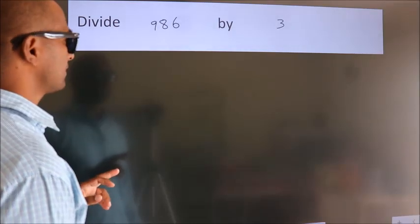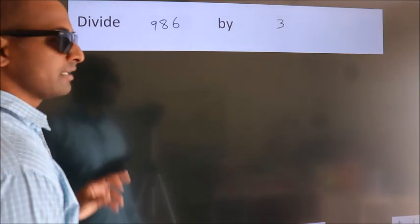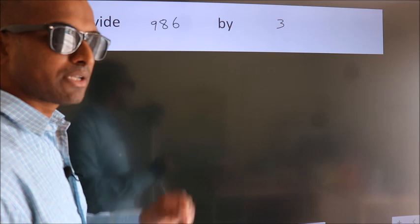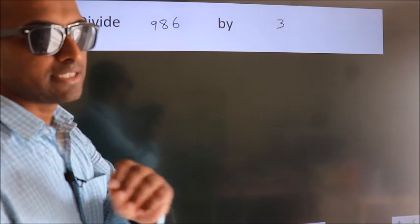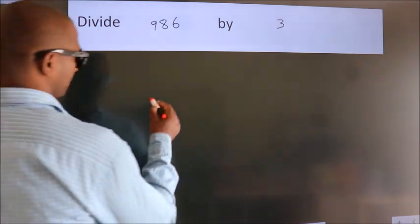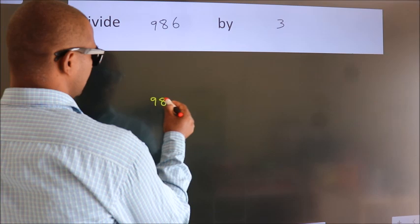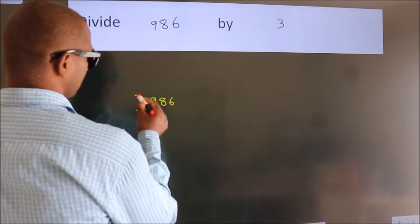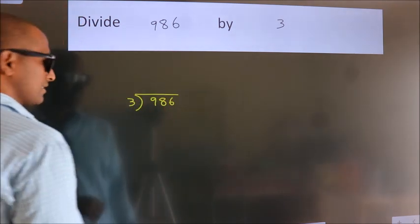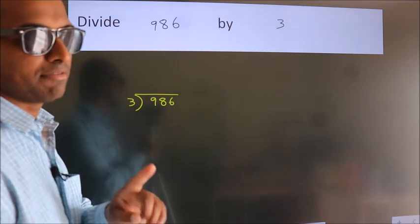Divide 986 by 3. To do this division we should frame it in this way. 986 here, 3 here. This is your step 1.